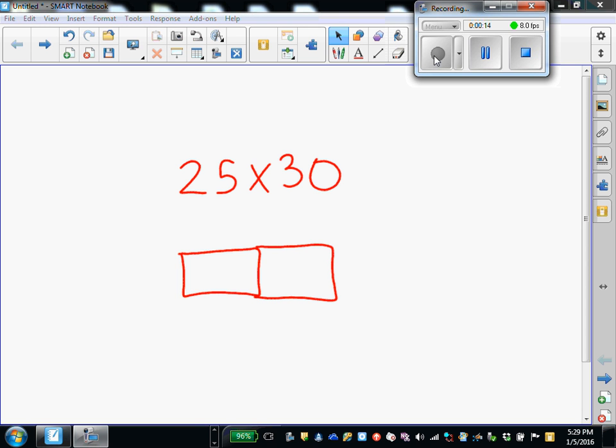We started to multiply two digits by two digits using an area model. So let's look at the problem 25 times 30. 30 is a multiple of 10. 30 is the same as 3 tens.